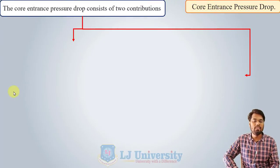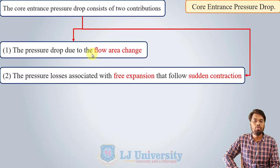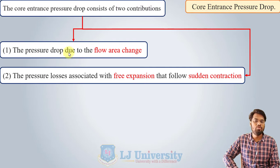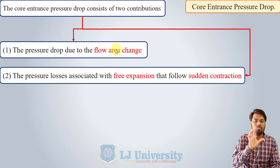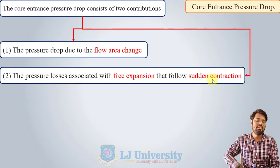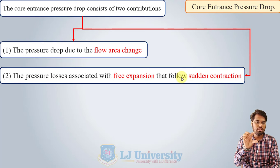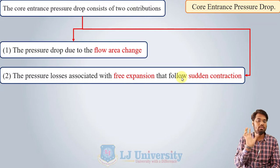Now let us discuss the entrance pressure drop. The core entrance pressure drop consists of two contributions: first, the pressure drop due to the flow area change (sudden contraction), and second, the pressure associated with the pre-expansion following sudden contraction. So there are two reasons for the pressure drop at the entry — the flow area change and the sudden contraction.